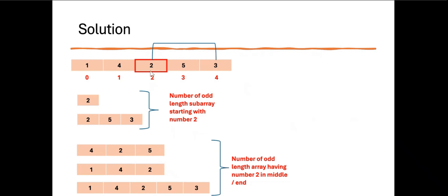This depends on the number of elements on the right side, including 2 itself — here there are 3 elements, so we see 3 total subarrays. For element 4, we see subarrays 4, then 4-2, then 4-2-5, then 4-2-5-3 — 4 subarrays, because there are 4 elements on the right side including 4. So the total number of subarrays starting with a particular element equals the number of elements from that element to the end.